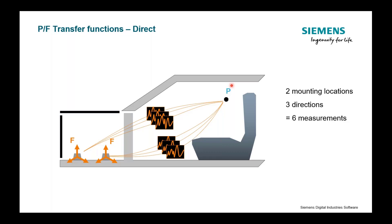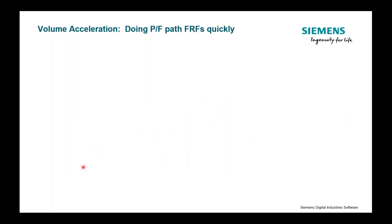This is what is called a direct measurement — putting in a force, measuring a pressure, getting a P over F the direct way. We can also measure transfer functions reciprocally, which means instead of putting energy into the system at the engine mounts and measuring output at the driver's ear, I would do it the opposite way: put my force in at the driver's ear and measure my response at the mount locations. Since forces have X, Y, and Z components, do we have a transducer that can measure the response in all three directions at once? The answer is yes.